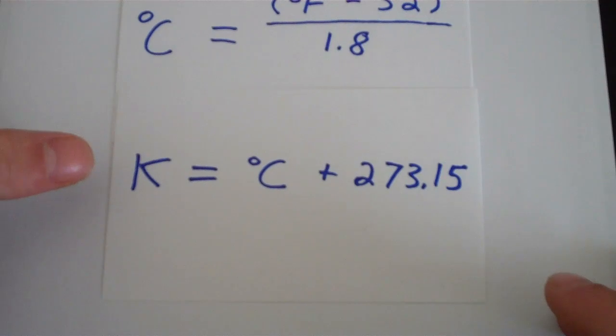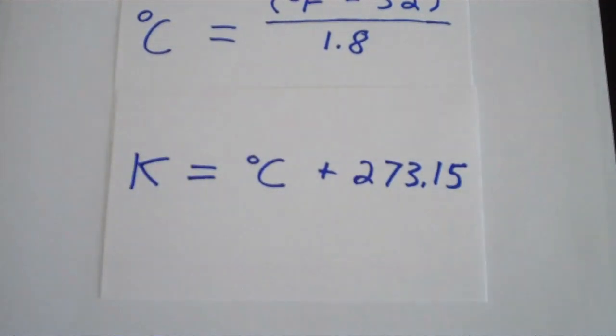And the bottom one says that to get Kelvins all you do is you take your degrees Celsius and you add 273.15.